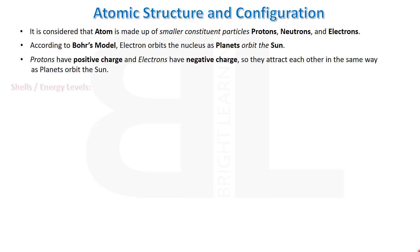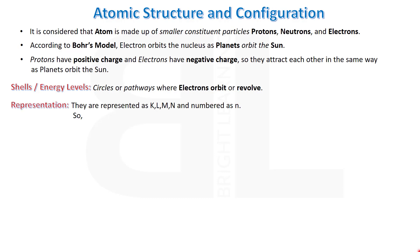Before starting configuration, you should learn some key terms: shells, subshells, and orbitals. Shells, also known as energy levels, are imaginary circles or pathways where electrons orbit or revolve, drawn outside the nucleus. They are represented by the alphabets K, L, M, and N.